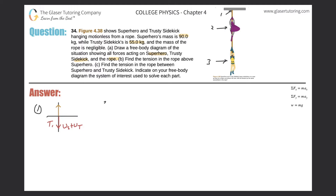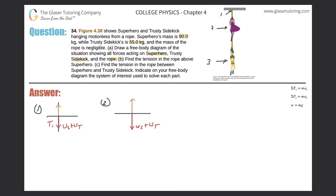At point two, from the superhero's perspective, his weight pulls straight down, and trusty sidekick's weight also pulls down from that point. So the downward force is the weight of the superhero plus the weight of trusty sidekick, which should equal the upward tension T1. This is consistent with point one — that same T1 balances both weights.